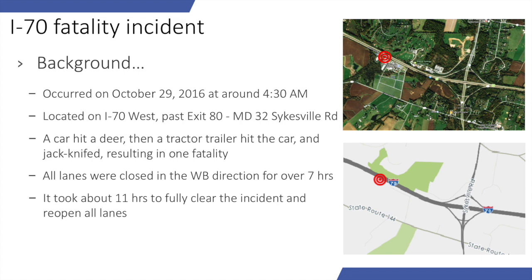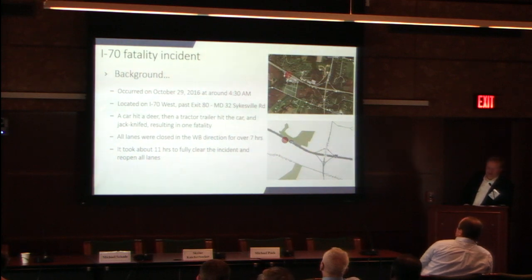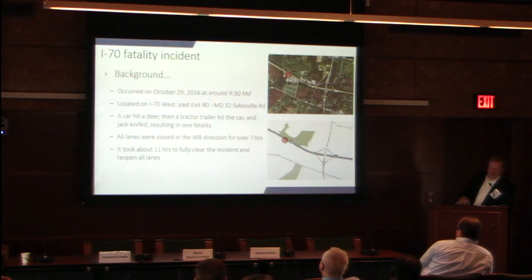I'm going to show you a couple of real incidents that were used for after-action reviews. The first was a fatality incident on I-70, out near Howard County Fairgrounds in rural Maryland. The incident occurred October 29, 2016, at 4:30 in the morning. A car hit a deer, then a tractor-trailer truck hit the car and jackknifed, resulting in a fatality. All lanes were closed in the westbound direction for over seven hours.